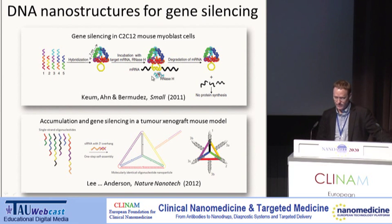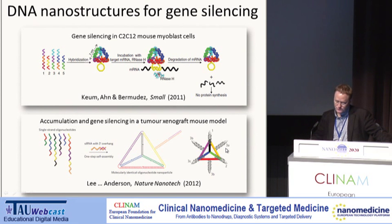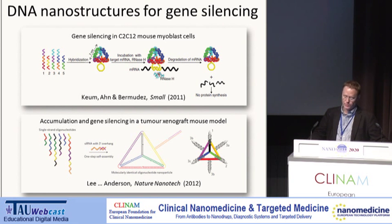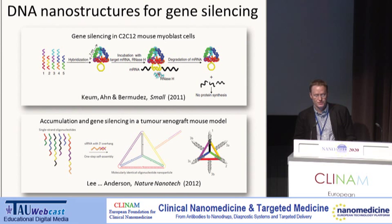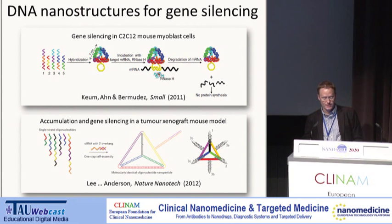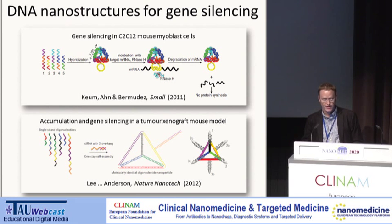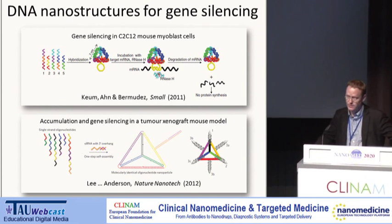In that study, they also incorporated folic acid at several sites in their structures, acting as a tumor-targeting ligand. Using this delivery system, they were able to obtain over 50% reduction in firefly luciferase expression in HeLa cells, and also a 60% reduction in bioluminescence intensity in a mouse model using luciferase-expressing xenografts.